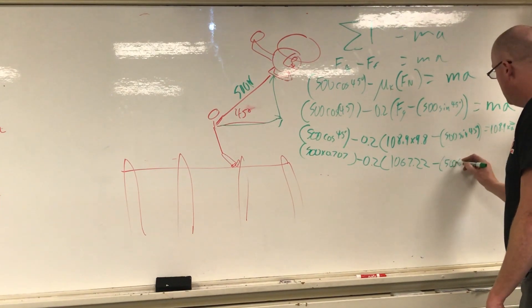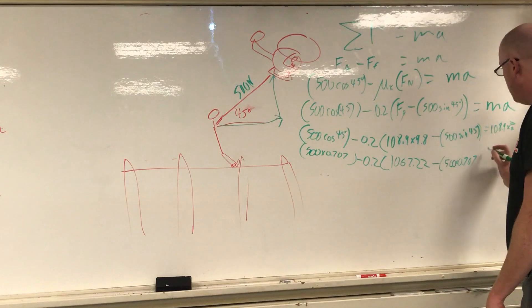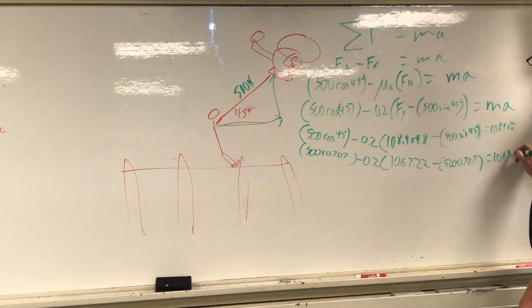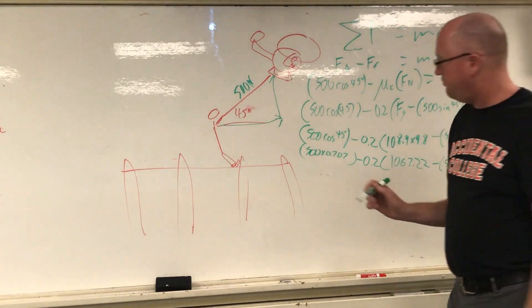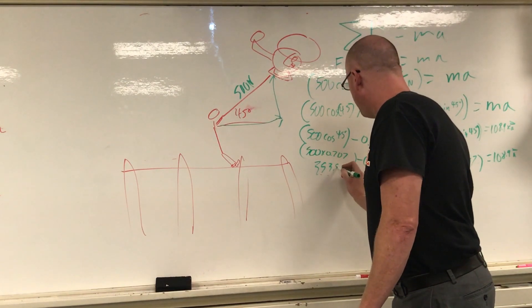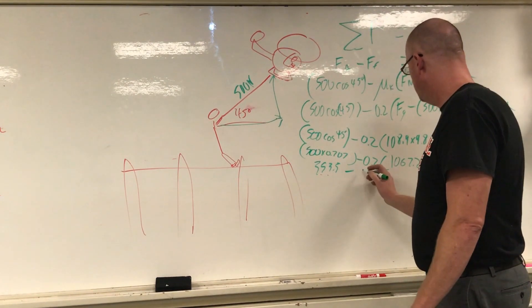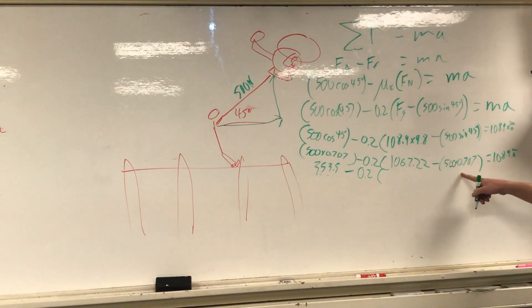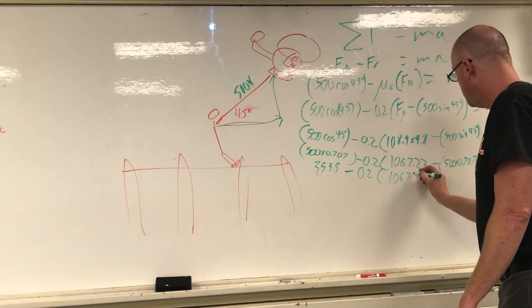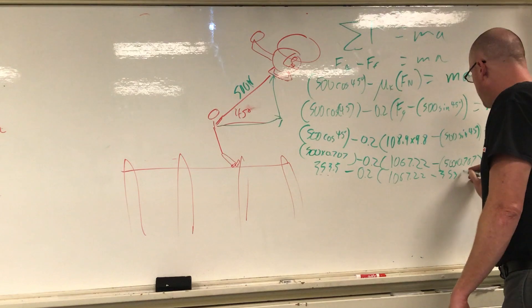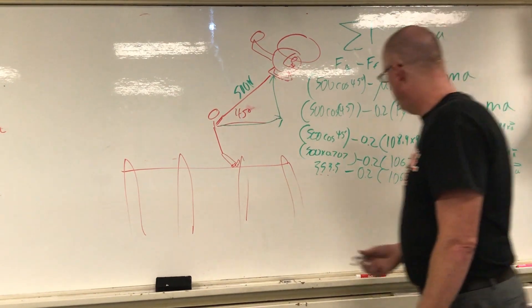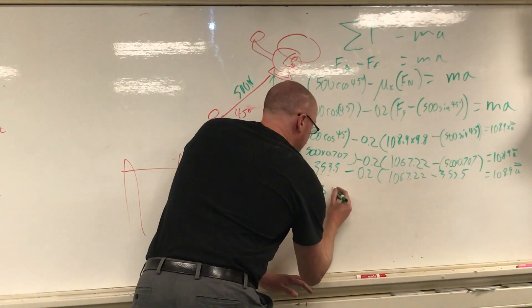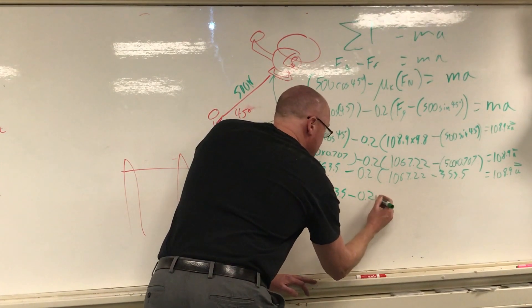1067.22. Minus, now by the way, one of the reasons I love 45 degree angles is that the sine and the cosine are the same, so I've already got it there, don't I? Okay, so it's going to be 500 sine 45 is 0.707 equal to 108.9 times acceleration. Because we're all trying to find out that little a at the end.